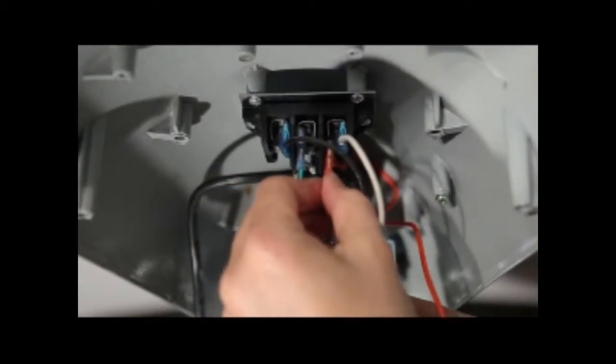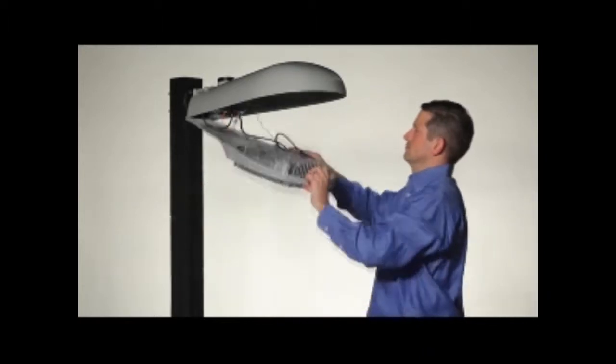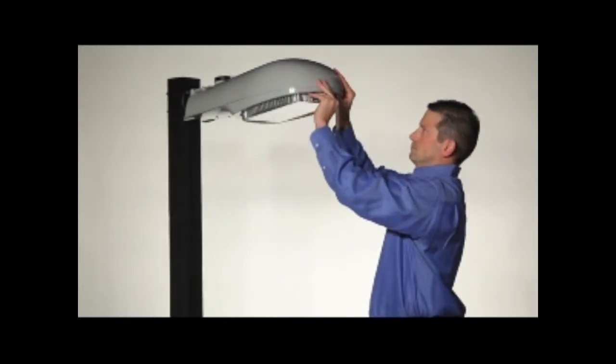Connect the white wire on the LED light engine to the white wire in the fixture. Do the same for the black wire. Close the Cobra Head housing and you're done.